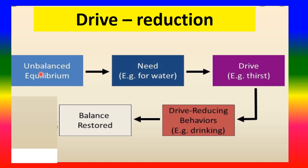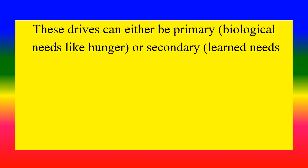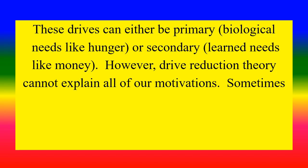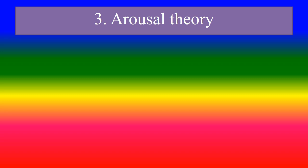Drive reduction: unbalanced equilibrium creates a need — for example, need for water — which produces a drive such as thirst. Drive reduction leads to behavior — for example, drinking — which restores balance. These drives can either be primary biological needs like hunger, or secondary learned needs like money. However, drive reduction theory cannot explain all of our motivations. Sometimes we are motivated to perform behaviors that do not seem tied to any needs or drive, primary or secondary.